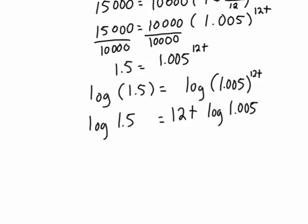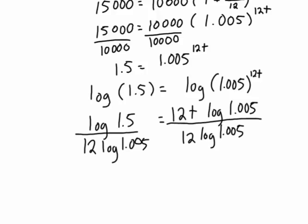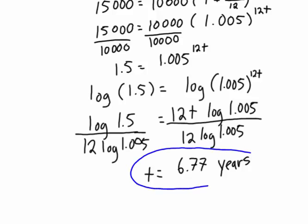We're almost there because we're trying to get t by itself. We can now divide both sides by 12, and remember, log of 1.005 is just some number. Divide both sides by 12 and log 1.005. In the end, we'll get a value for t. We just need to take that number, fire it in your calculator, and we get 6.77, and in this case, we're dealing with years. So we now can tell Danny Boy that if you want that $10,000 to become $15,000, it'll take 6.77 years.